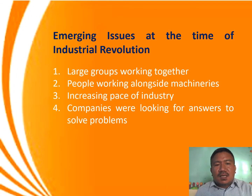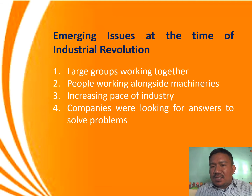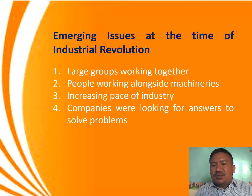Here are some of the emerging issues at the time of the Industrial Revolution: 1. Large groups of people working together. 2. People working alongside machineries. 3. Increasing pace of industry. 4. Companies were looking for answers to solve problems.